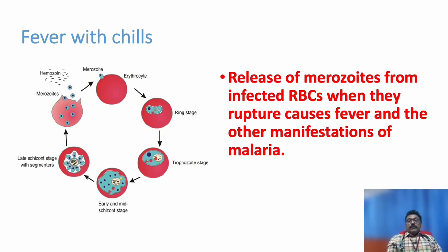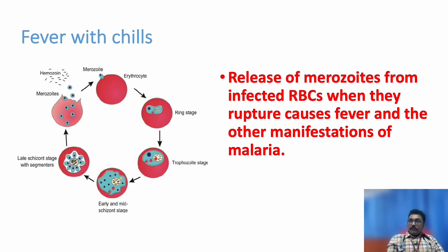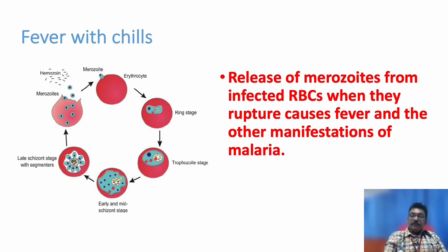The merozoites will be released from the RBCs, and during that phase the patient develops all symptoms of malaria like high degree fever, chills, rigors, and sweating. These all occur during the merozoite release from the RBCs. Rupture of RBCs produces all complications and symptoms in malaria.